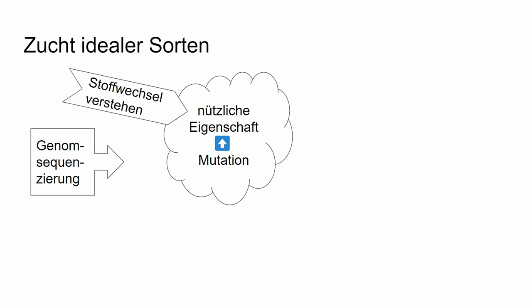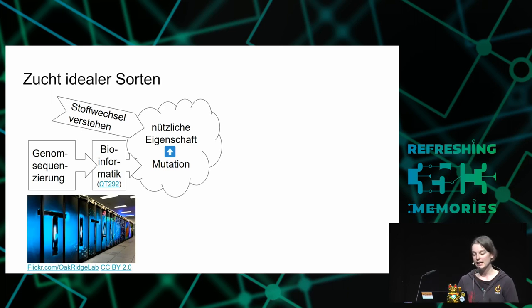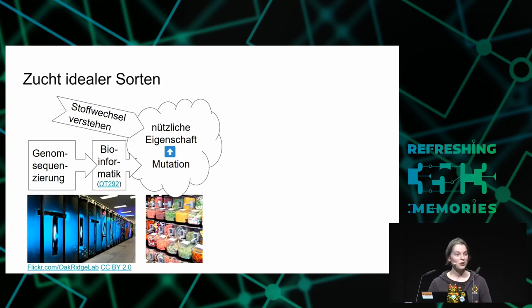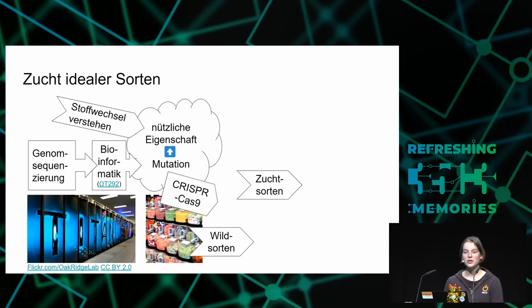A second path is genome sequencing, which is also apparently following Moore's law — getting faster, cheaper, and better. Of course this is a lot of data, which means we need big data methods to process it and we need a lot of computational power. In the end we hope to yield a process allowing us to find out which gene change causes what effect, with the end goal being a kind of candy store where we can select what we want and know exactly what change is needed.